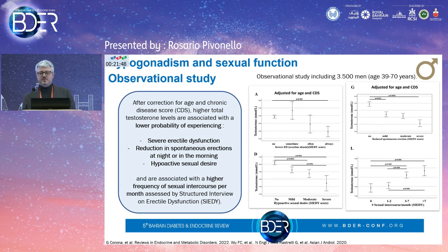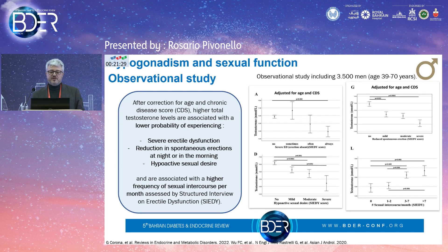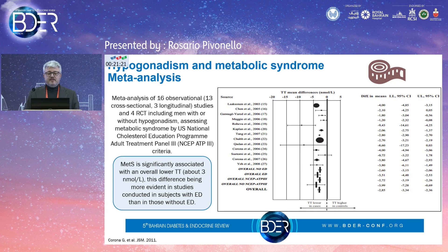Sexual function is the main determinant in the clinical picture of male hypogonadism. Hypogonadal men are associated with erectile dysfunction, reduction of spontaneous nocturnal and morning erections, and reduction of sexual desire. A meta-analysis of 16 observational studies and four randomized controlled trials demonstrated that metabolic syndrome is significantly associated with overall lower total testosterone, and this difference is more evident in subjects with erectile dysfunction.